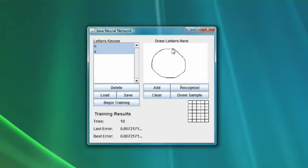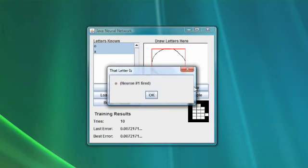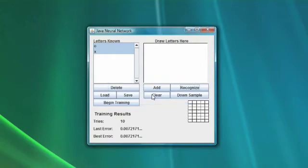Now we are drawing an O. And we are going to click recognize. Neuron one fired and it recognized it as an O. So we have demonstrated that the neural network can handle these two characters that we have given it.